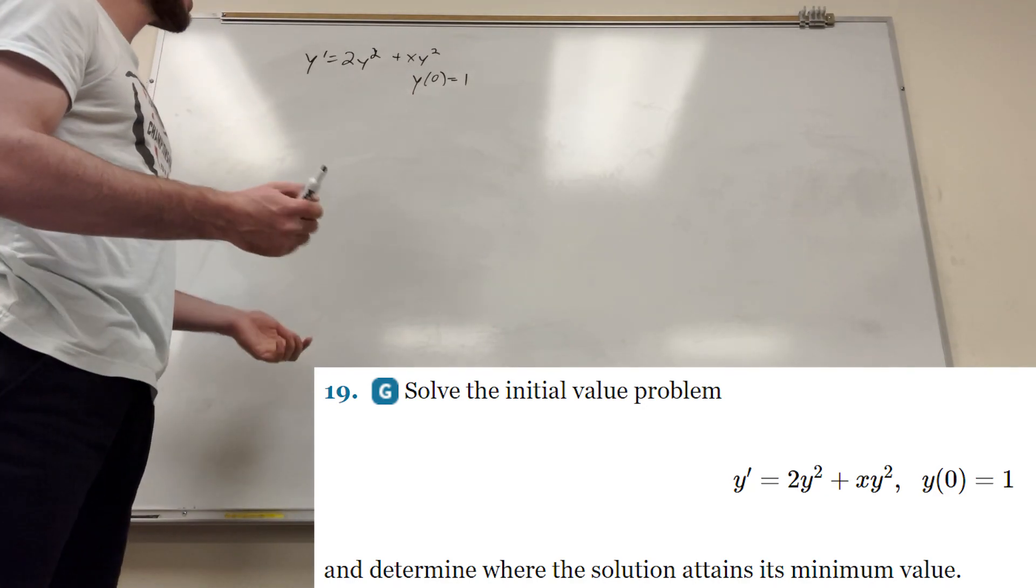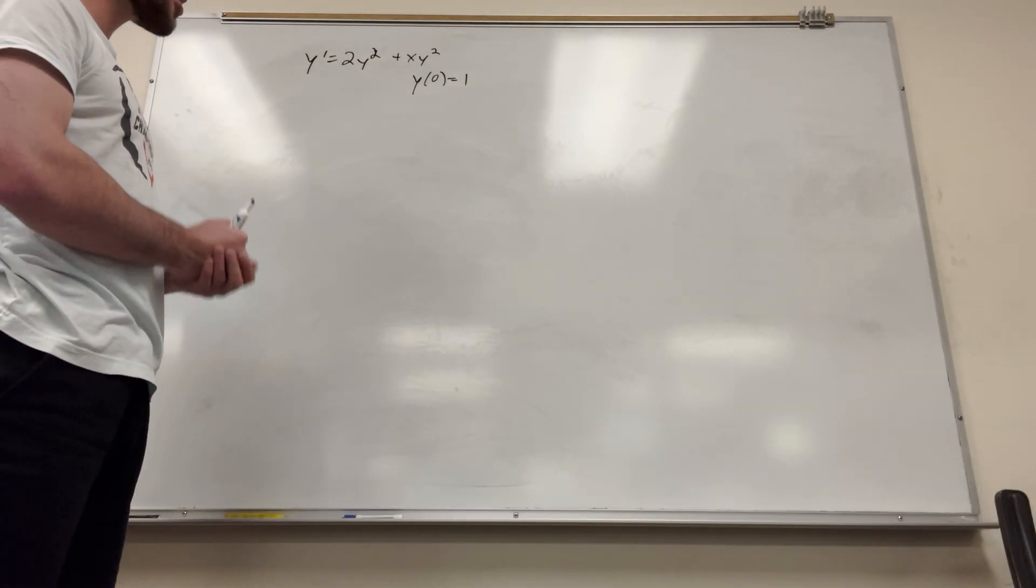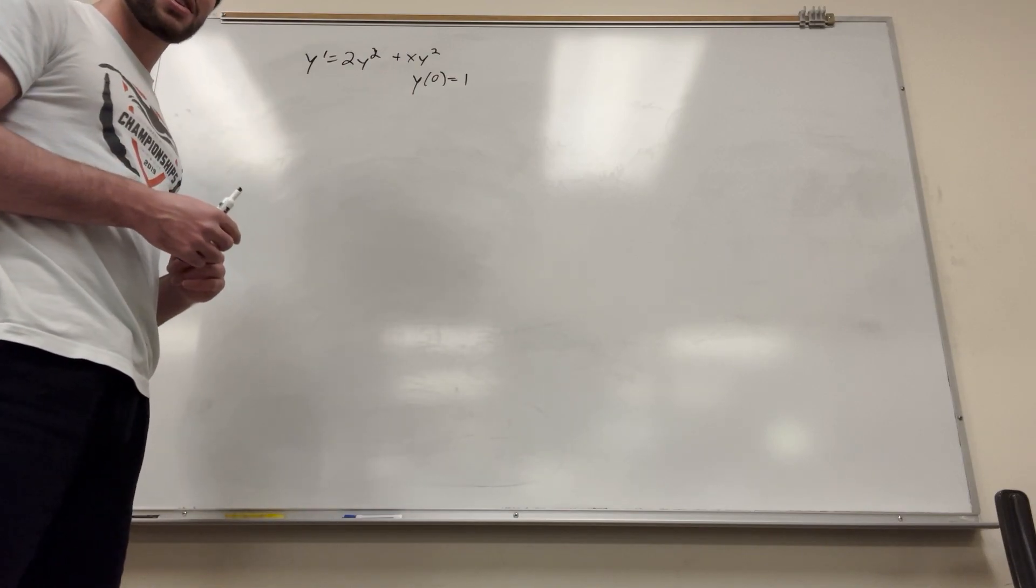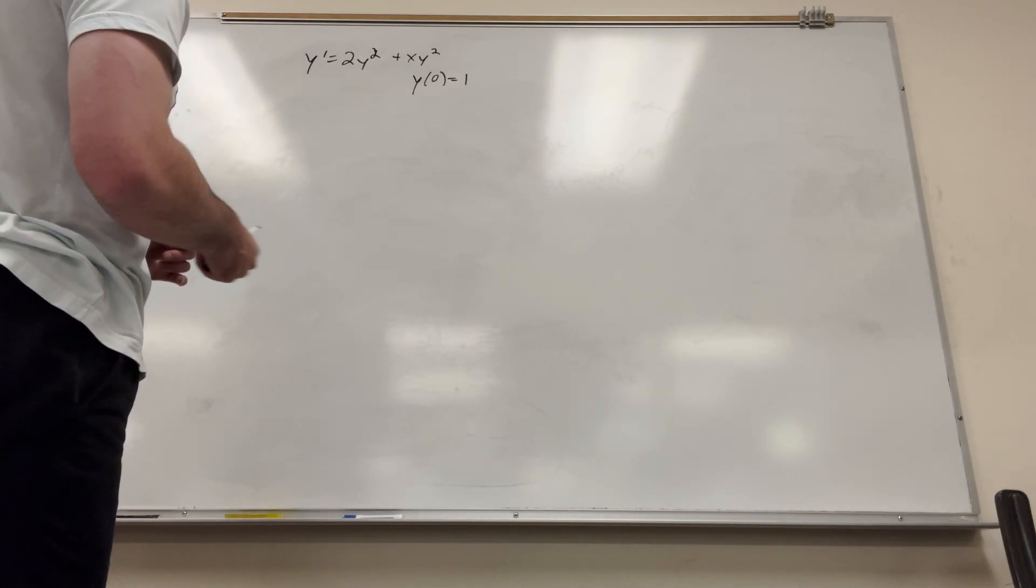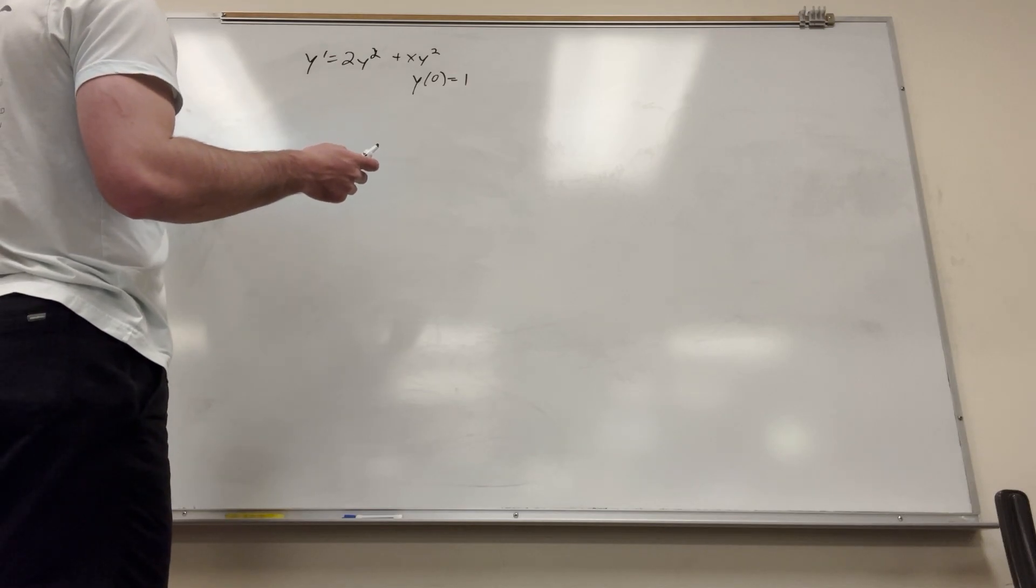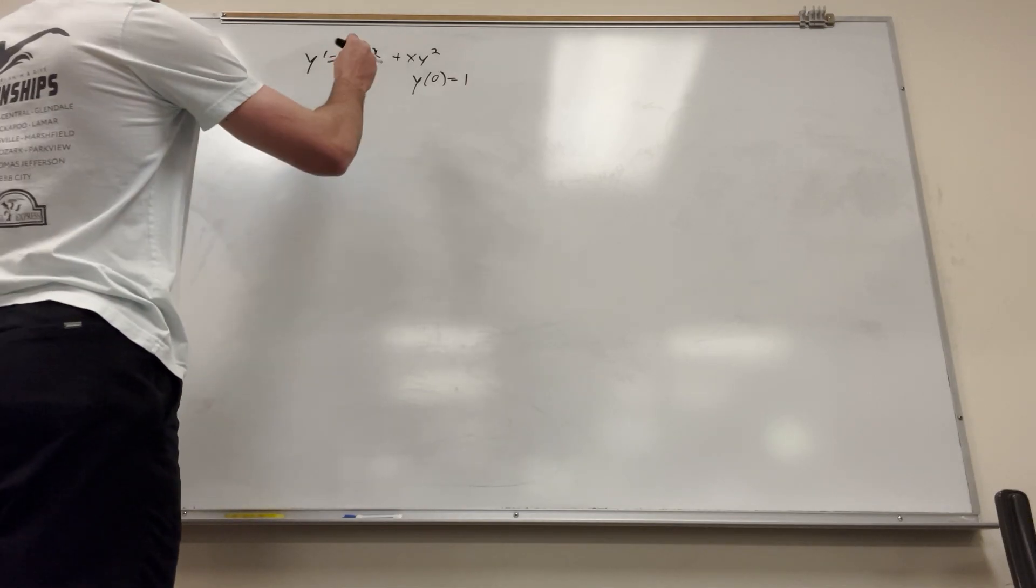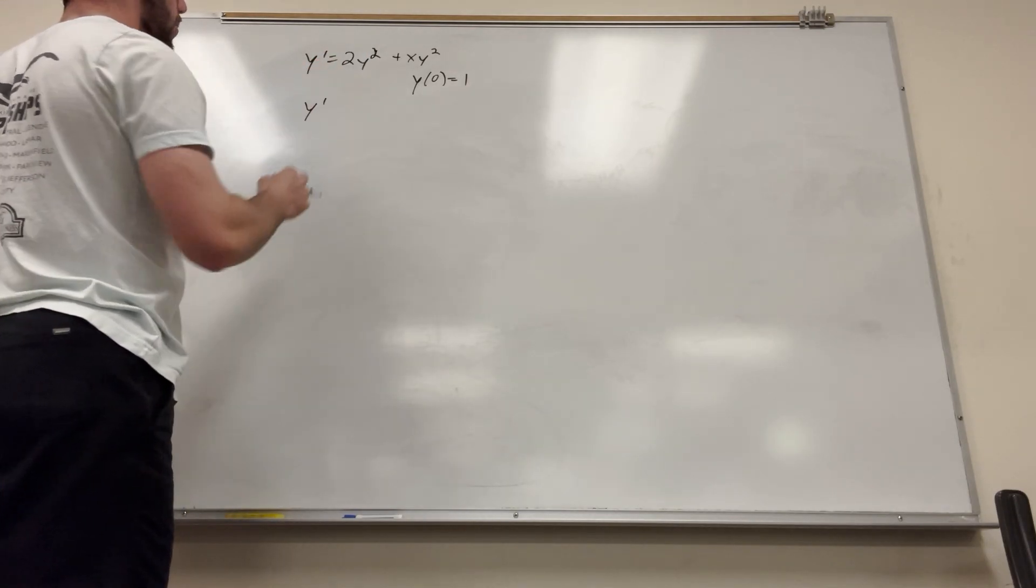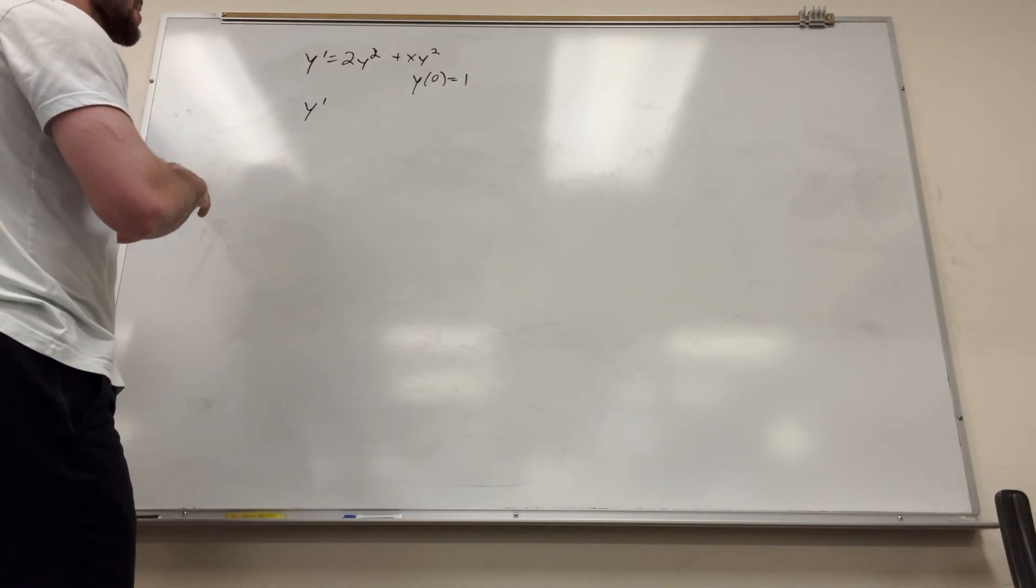How are we going to do this? Well, let's go ahead and just solve it for the general solution and we can find the particular solution and then we can figure out where the minimum value is. So what I'm going to do here is I'm going to divide, I'm going to factor out y squared. We want to get the y's and x's on opposite sides.